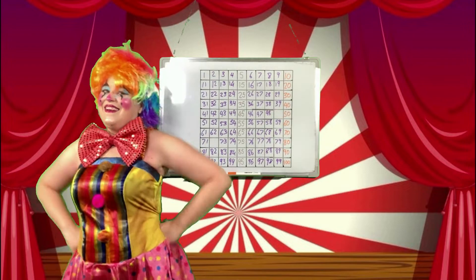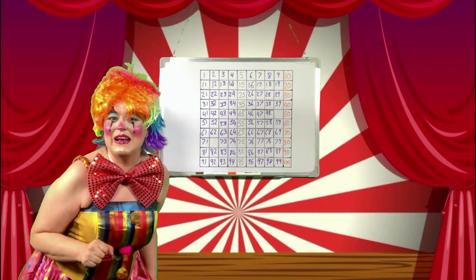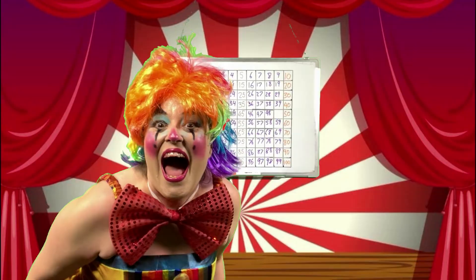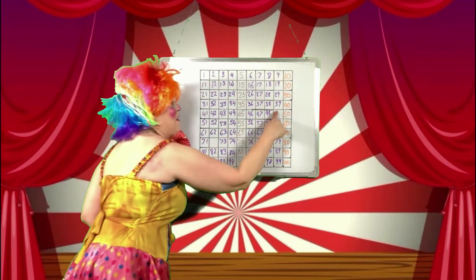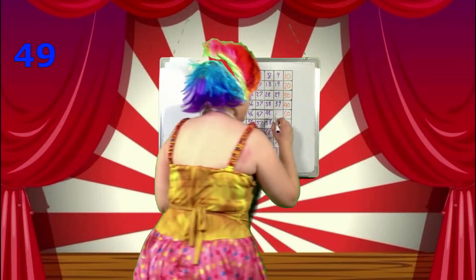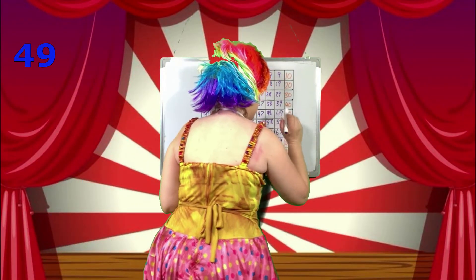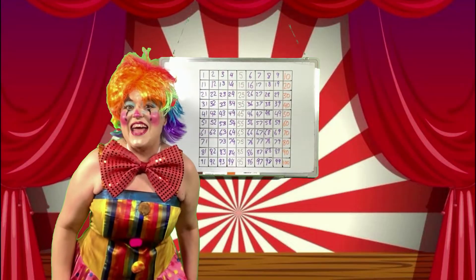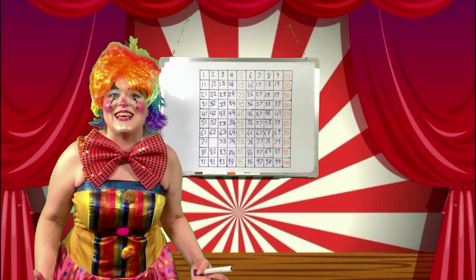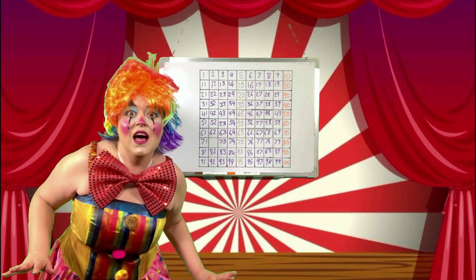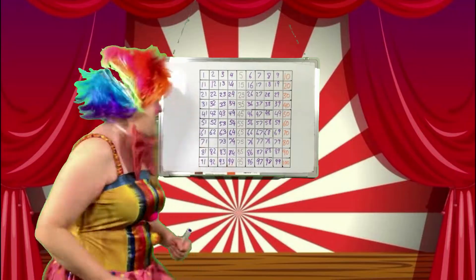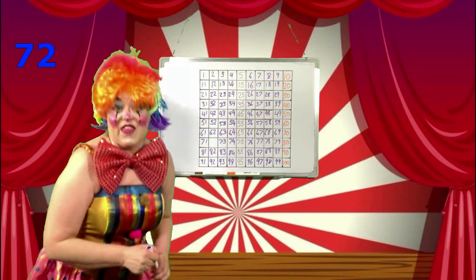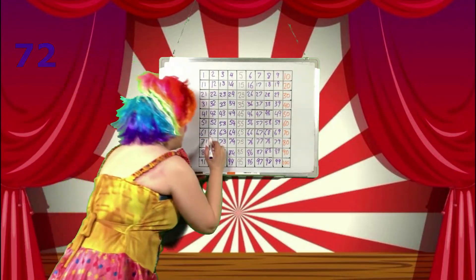Excellent! Okay! What is another missing number? How clever! The number 49 is missing! We know that 49 is missing because it's between 48 and 50! Fantastic! One more missing number! What is it? You're so clever! It is the number 72! 72 is bigger than 71 and smaller than 73!